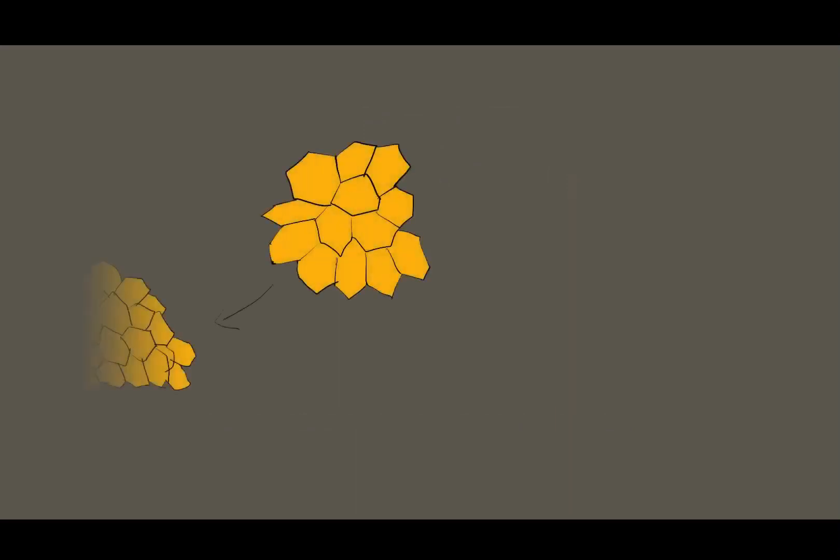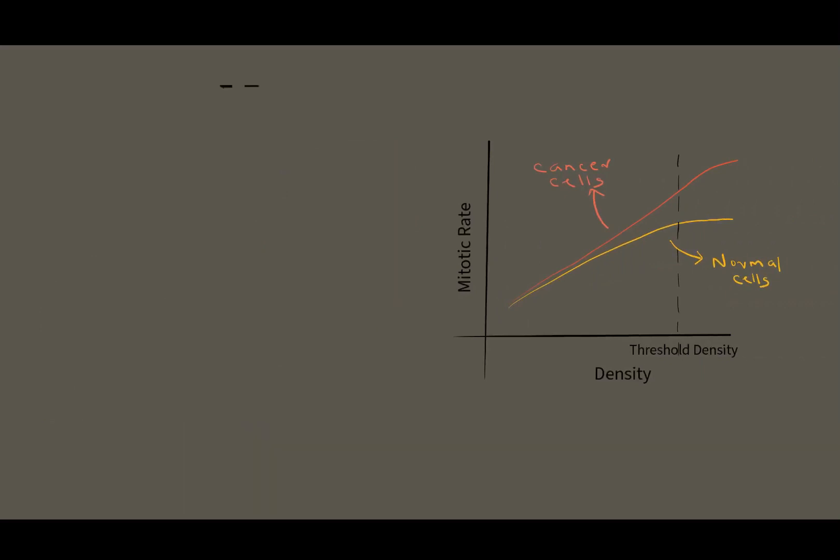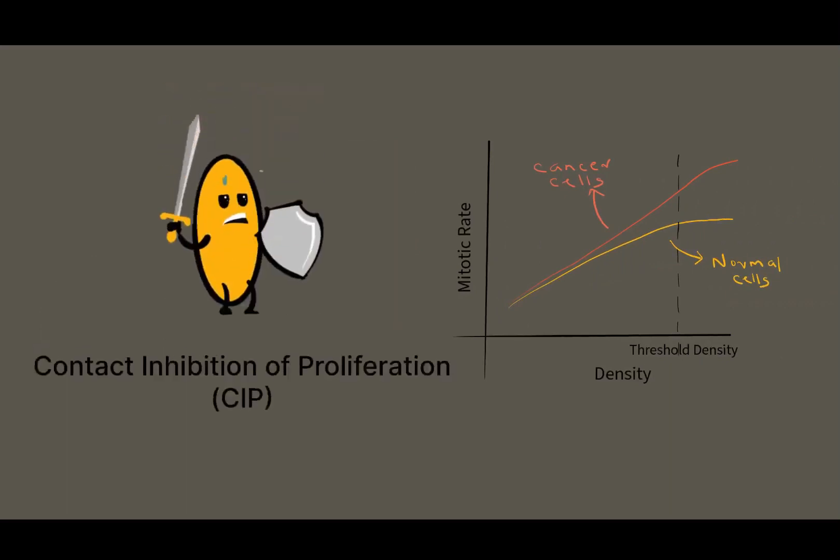When the cell number density reaches a specific threshold, the cells stop dividing further. This process is called CIP or contact inhibition of proliferation.